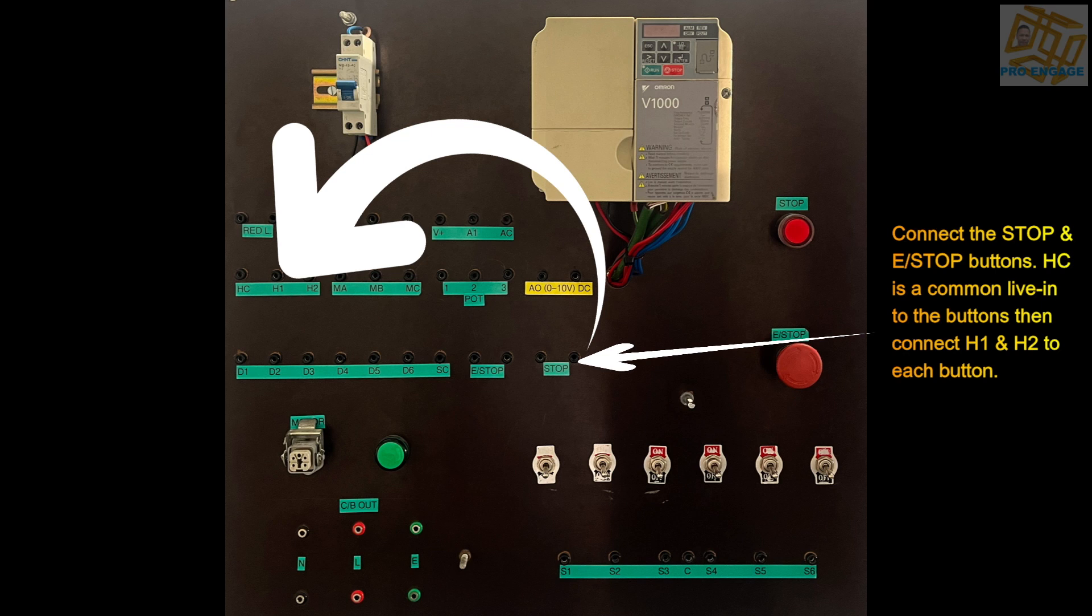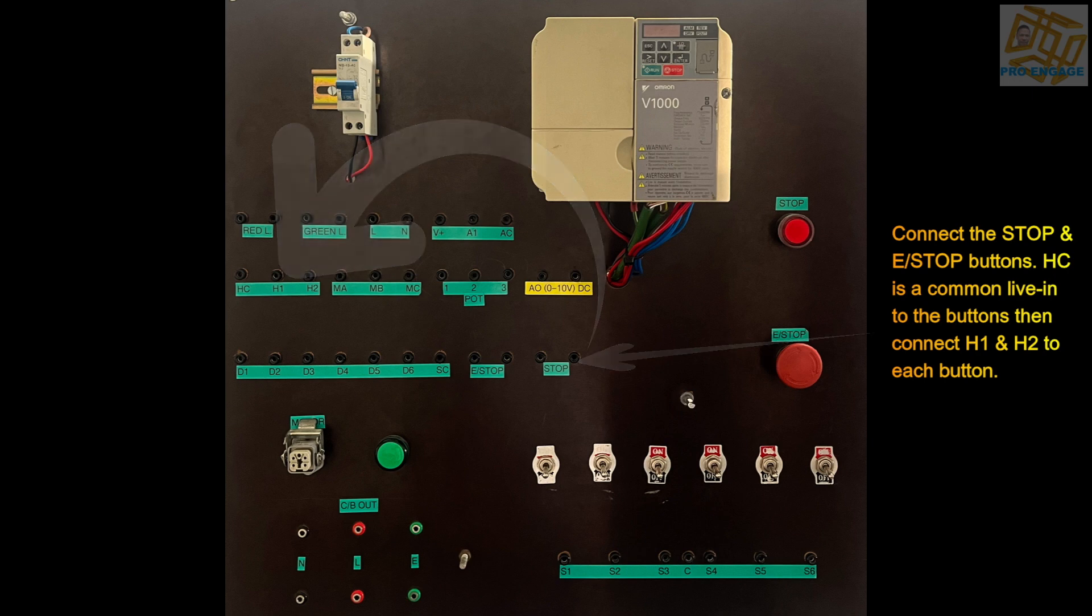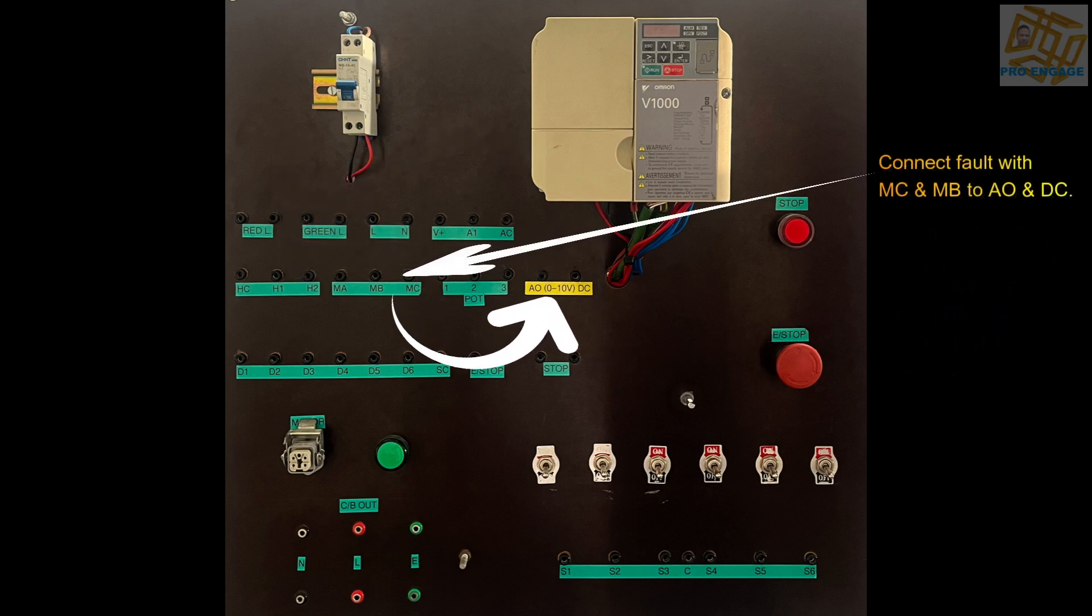On the right hand side of the panel, the e-stop and the stop, these are the connection points. We have to connect the fault which is MC and MB, and you can find those points as well.